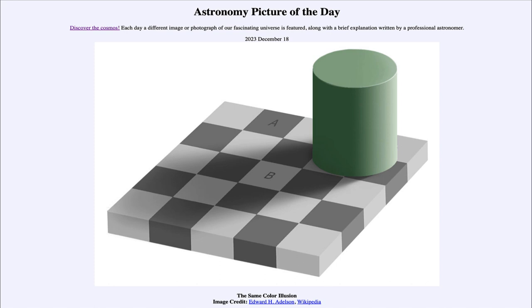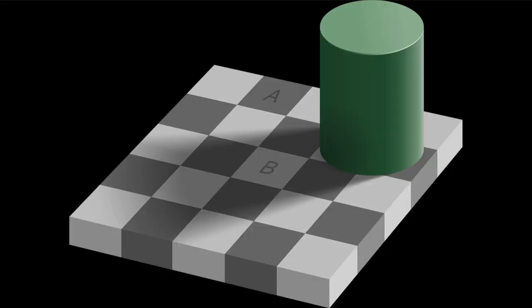So what do we see here? Let's go ahead and zoom in and take a look at our image. What we see is what looks like a checkerboard with alternating light and dark spaces. In addition, we see a green cylinder sitting on it.